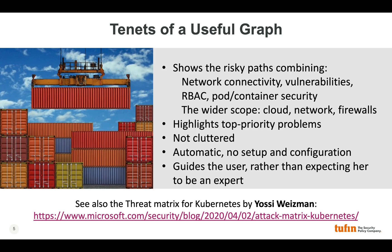The tenets of a useful graph are that it shows you risky paths combining the various factors across the cluster, but also outside of the cluster. You want to see network connectivity, vulnerabilities, and configurations, but also the cloud configuration itself — maybe RBAC at the cloud level, maybe firewalls. It'll also highlight the top priority problems. The graph won't be overly cluttered, it's automatic, and it guides you instead of expecting you to be the expert.